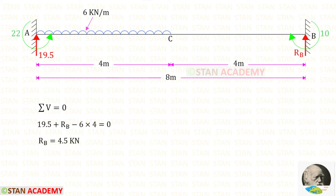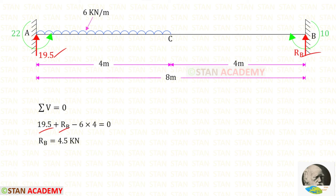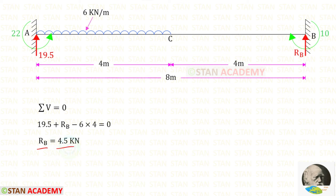Now let us apply the condition sigma V = 0 to find RB. RA and RB both act upwards so they are positive, while the UDL acts downwards and is negative over a distance of 4 meters. Finally, for RB we get 4.5 kN.